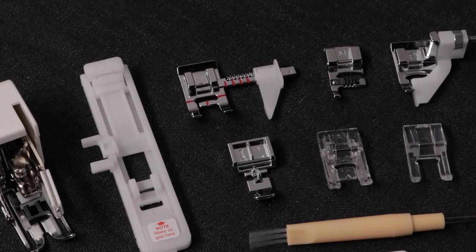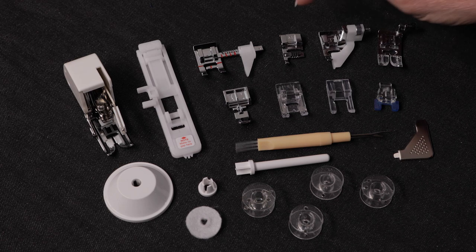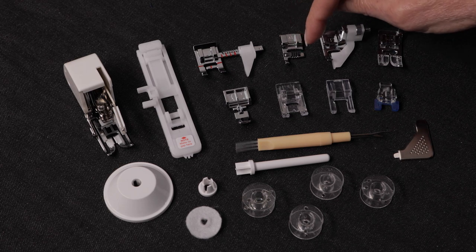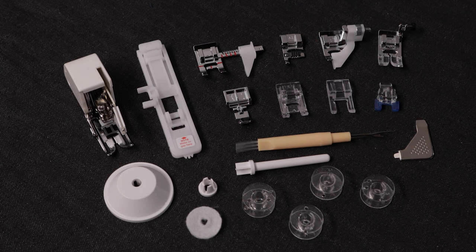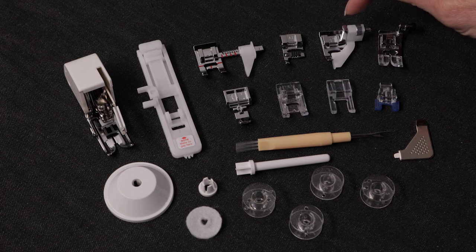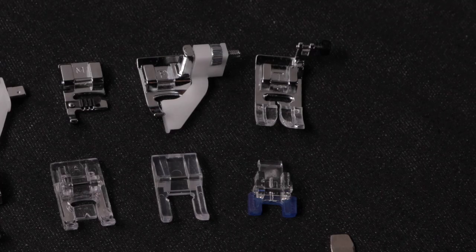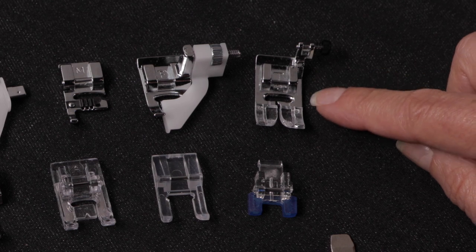This is the cording foot for attaching one, two, or three small yarns or cords. This is the blind hem foot for sewing blind hems, and this is the all-purpose foot. That's on the machine when you take it out of the box.